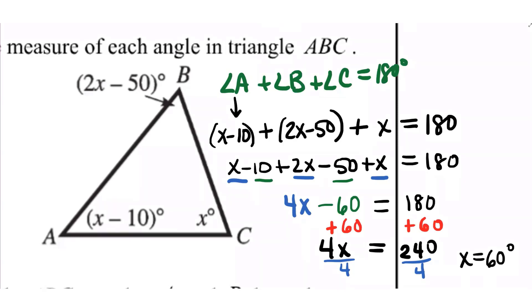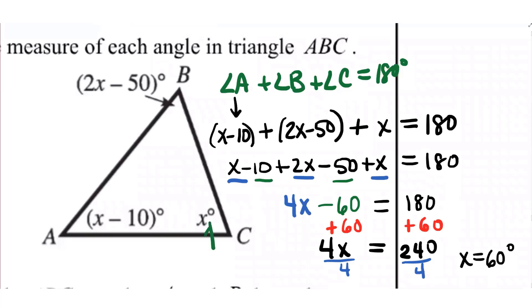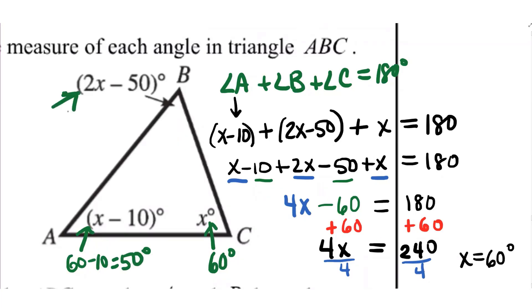You have to go back and look at what they're asking you to find. In this case, they were asking us to find each angle, so we actually have one of them now — we know that angle C is 60 degrees. We just need to figure out the other two. Angle A: 60 minus 10 is 50 degrees. And angle B: 120 minus 50 is going to give us 70 degrees. So we're done.